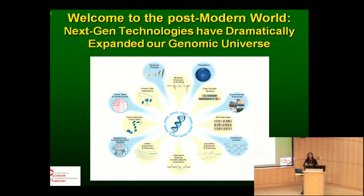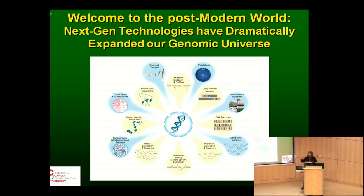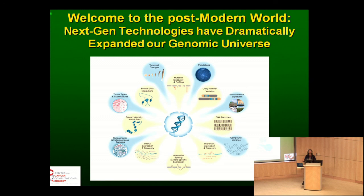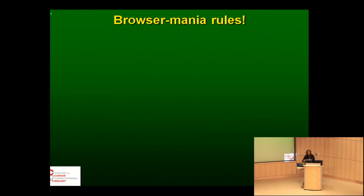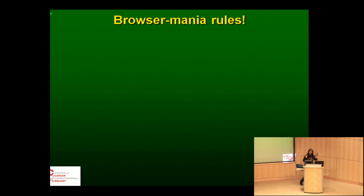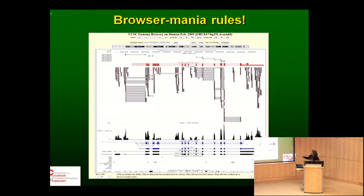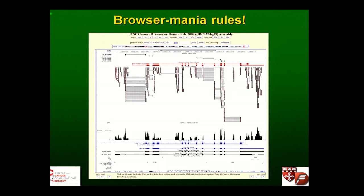Today the cost of generating data using sequence-based technologies is about a factor of two compared to using arrays, and I can guarantee within the next year it's going to be cost-competitive with array-based techniques. So what that really means is that we've started to go back to looking at the sequence and expression of genes, not just in terms of overall expression levels, but to be able to ask real questions about what those sequences represent in terms of different transcripts and different exons. This is everybody's favorite genome browser — the UC Santa Cruz genome browser.